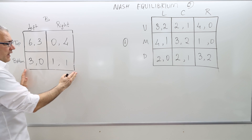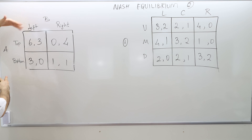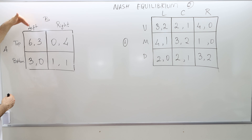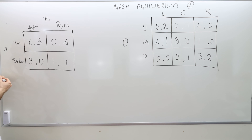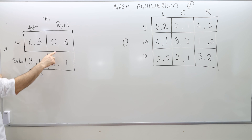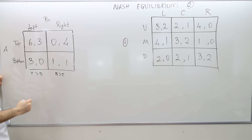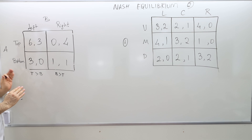So let's focus on the first game. In the first game, I still have two players, A and B. Each player has two actions: top and bottom for player A, left and right for player B. Here I try to find the dominant strategy for player A. Because he is the row player, I'm comparing the first numbers across rows. 6 is higher than 3, that means top is better than bottom. But 1 is higher than 0, that means bottom is better than top. So therefore, there is no domination between these two strategies for player A.